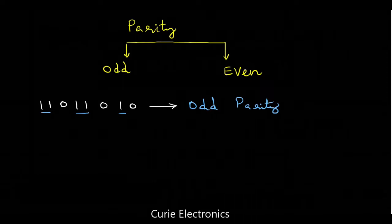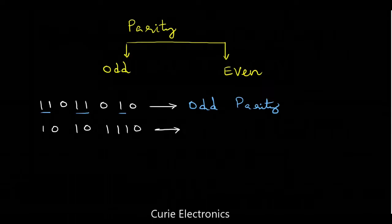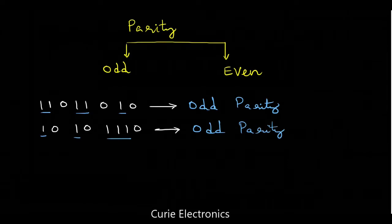One more example: 1 0 1 0 1 1 1 0. In this byte of data, what is the parity? Is it even parity or odd parity? 1, 2 — so 5. This is also odd parity. Odd parity means an odd number of ones — that can be 1, 3, 5, 7, like that.